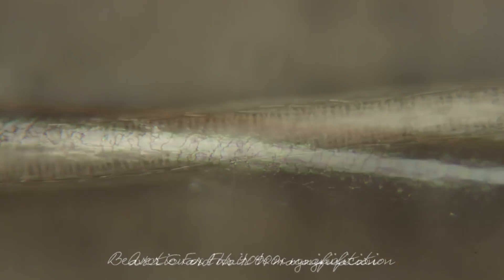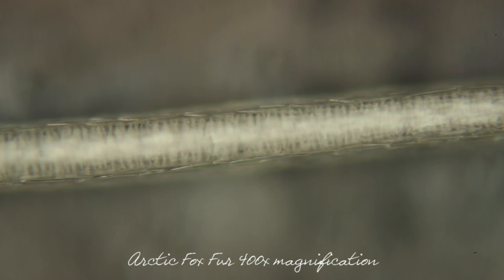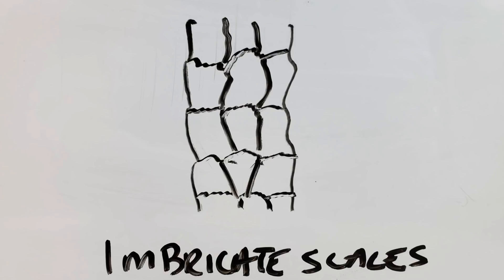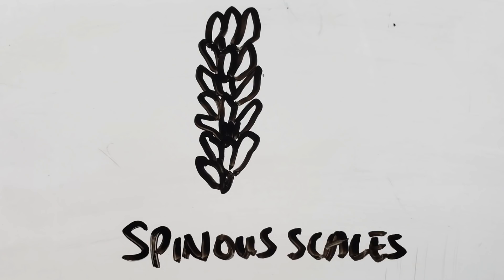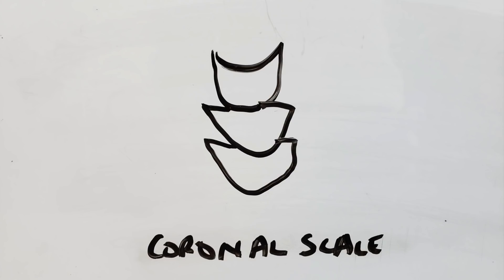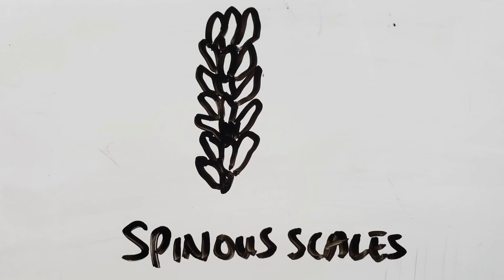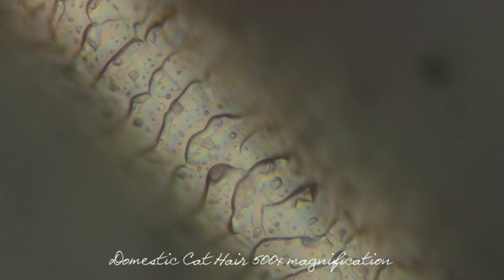Animal hair has many types including stiff guard hairs, fluffy undercoat, and whiskers. The cuticle is made up of scales on the outer layer of the hair and can be very useful in determining the species. There are three types: coronal or crown-like, imbricate where the scales are flattened along the surface, and spinous where it looks like a flower petal. Coronal scales can be seen in fine rabbit fur, and spinous scales are found in some species like cats and mink.